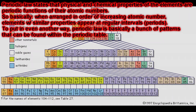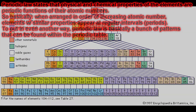Periodic law says that physical and chemical properties of the elements are periodic functions of their atomic numbers. Basically, when arranged in order of increasing atomic number, elements with similar properties appear at regular intervals, which are the periods. To put it another way, periodic law is basically a bunch of patterns that can be found within the periodic table.